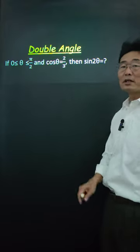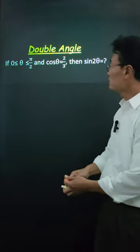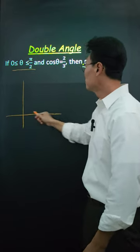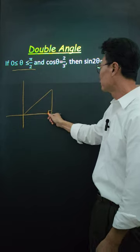Here's how I could find sine of 2 theta without a calculator. First, we notice that the theta is between 0 and pi over 2. So we're going to draw the triangle in the first quadrant.